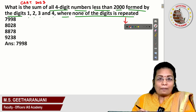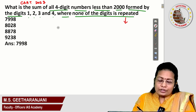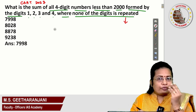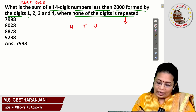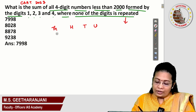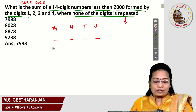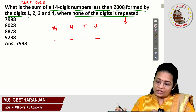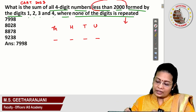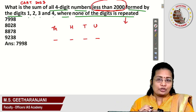Let me form the four-digit number. Every four-digit number is of the form: units, tens, hundreds and thousands. If you place the four digits you will get a four-digit number. The main condition given here is the numbers must be less than 2000.